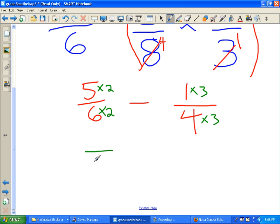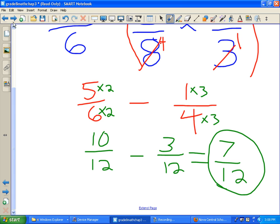So the bottoms will be 12 as we said. Now we just got to work out the top. 2 times 5 is 10. 3 times 1 is 3. Now all we got to do is 10 take away 3 is 7. And then of course the bottoms don't change when you're adding or subtracting. And there's our answer.